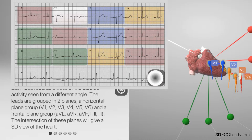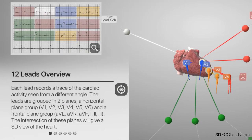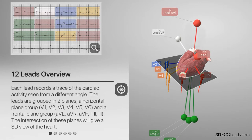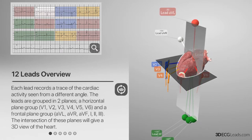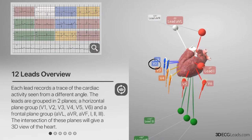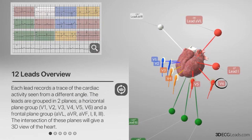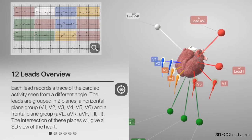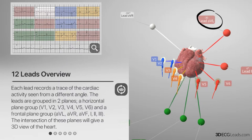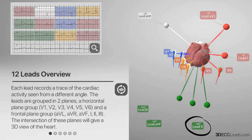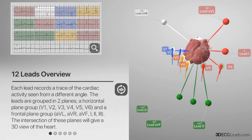Taking a closer look at this model, we can see that the tracing leads are grouped in two planes: six on the horizontal plane and six on a vertical plane. The ones on the horizontal plane are known as the precordial leads and are named V1 through V6. The ones on the vertical plane are named AVL, AVR, AVF, 1, 2, and 3 — these are known as the frontal leads.